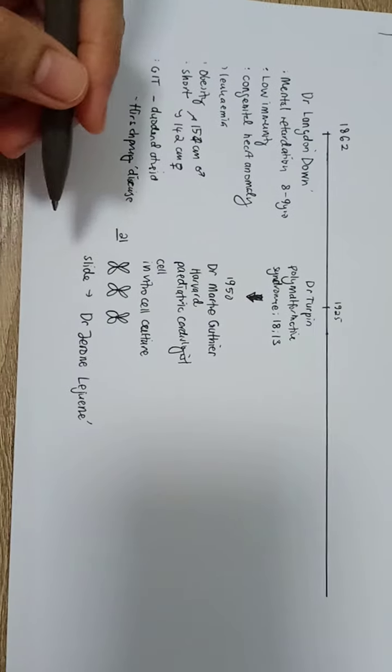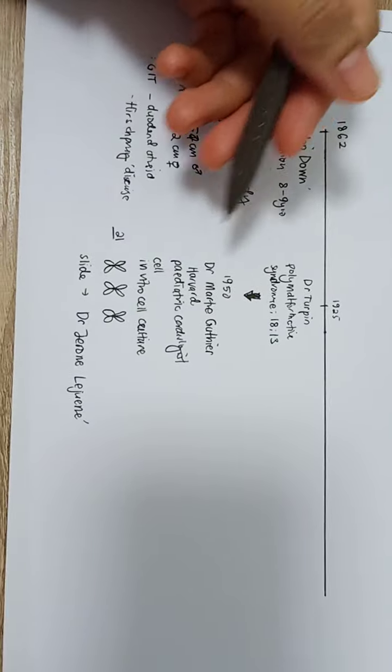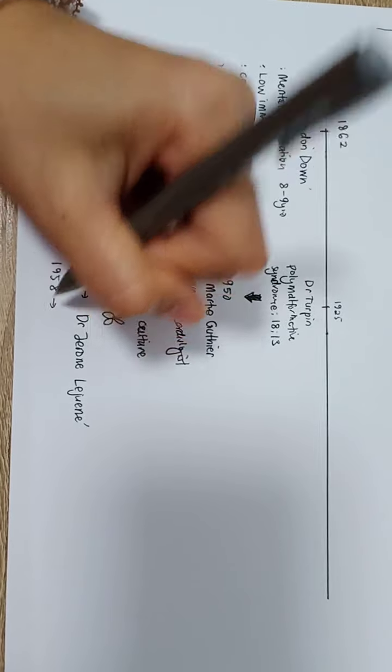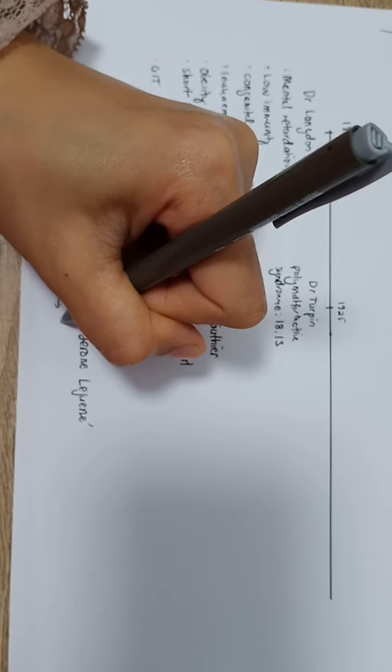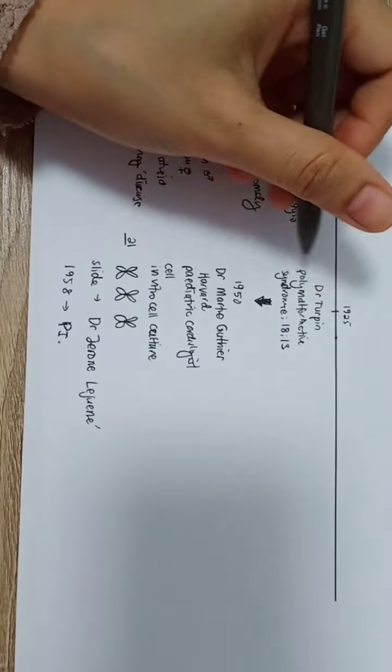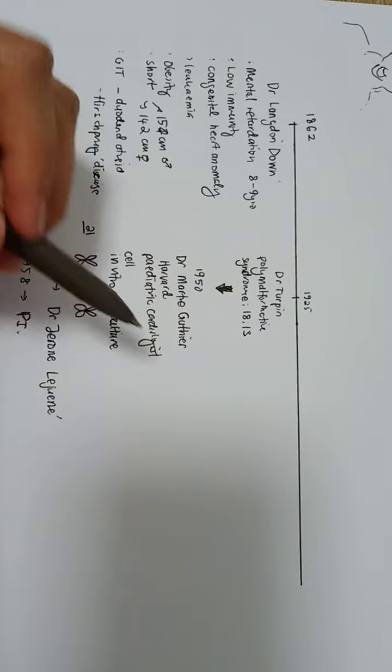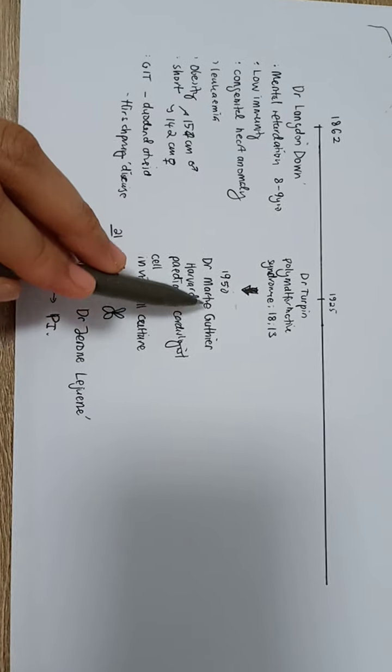Unfortunately, Dr. Jerome Lejeune took the slides and started studies on this. In 1958 he published a paper with himself as the primary investigator and Dr. Martha Gautier and Turpin as the co-authors. But at one point he wrongly spelled the family name of Martha Gautier.